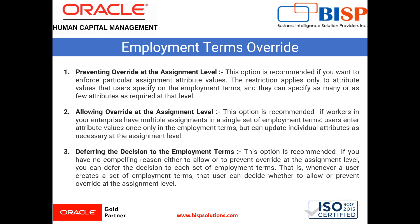Any value that a user sets from the employment term can be updated without restriction at the assignment level. If you select Yes — allowing override at the assignment level — this option is recommended if workers in your enterprise have multiple assignments in a single set of employment terms. Users enter attribute values once only in the employment term but can update individual attributes as necessary at the assignment level. With this option, users can update assignment attribute values inherited from the employment term.